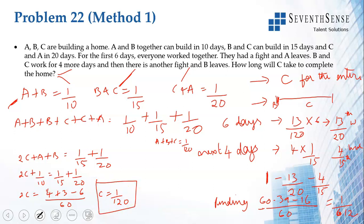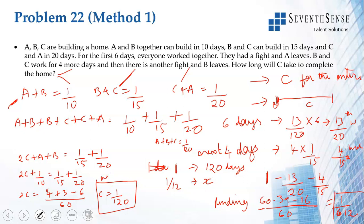C will do 1/120th of the work in one day. He has 1/12th of the work remaining. To complete the entire work, C takes 120 days. To complete 1/12th of the work, C takes 120 × 1/12 = 10 days. So if the question was how long will C take to complete the entire house working alone, it is 120 days. How long will C take to complete the home after B leaves is 10 more days.